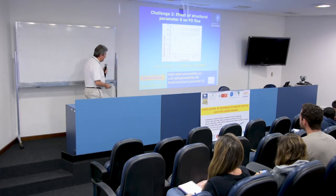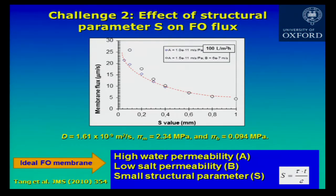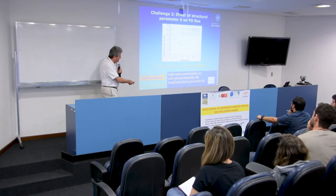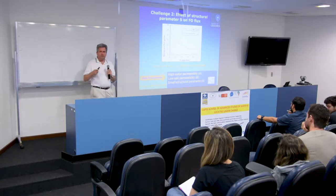The parameter S — the product of tortuosity and thickness divided by porosity — we want to make as small as possible. Calculating the membrane flux for a typical system as a function of S value shows that as S increases, the membrane flux decreases almost exponentially. A good membrane will have a high water permeability (factor A), a low salt permeability (factor B), and a small structural parameter S. This is simple on paper but probably very difficult in practice. These are the focuses for new membrane proposals.